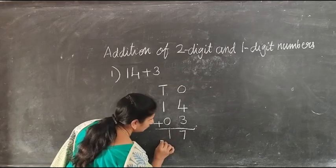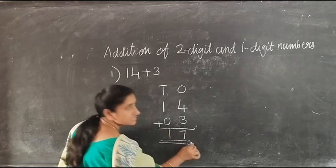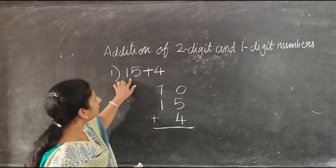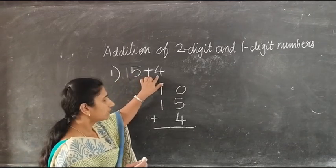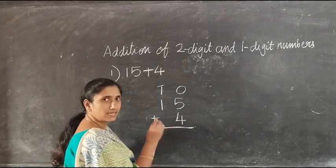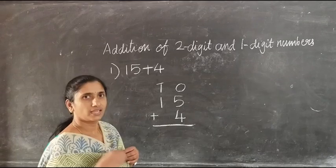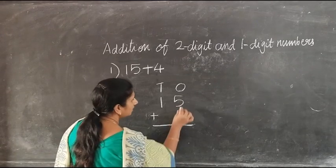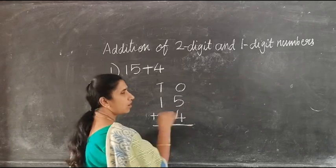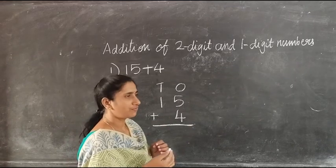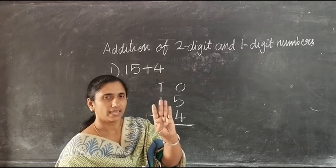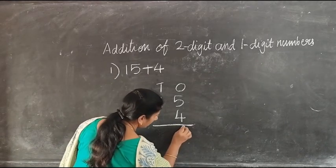Our next question is: add 15 and 4. Here also, first we have to write 15 and 4 in the tens and ones columns. Next, add the ones, that is 5 plus 4. So count after 5: that is 6, 7, 8, 9. Then write 9 in the ones place.